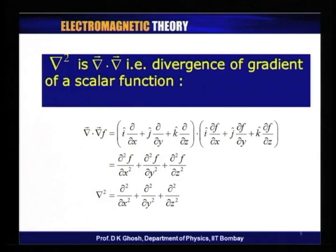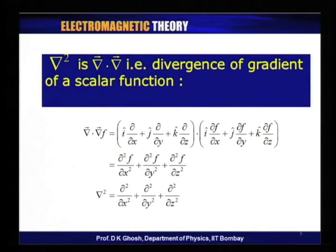Now, del square, which is also called Nabla square sometimes, has the name Laplacian operator, and is basically del dot del. What is del dot del? Del dot del means the second del is essentially a gradient. So in other words, I am expecting a scalar function to appear to the extreme right. So del dot del, let me work it out.